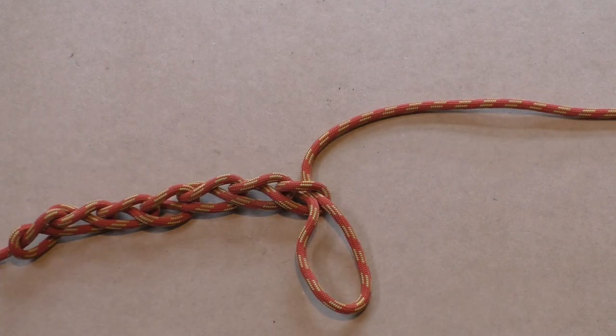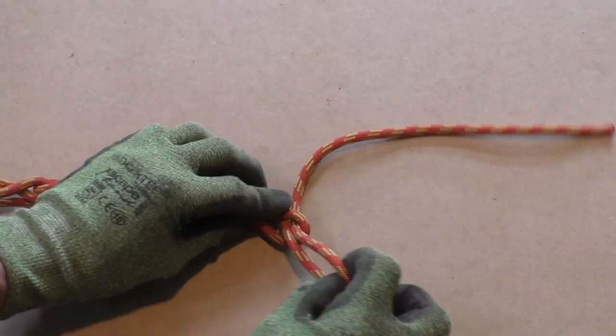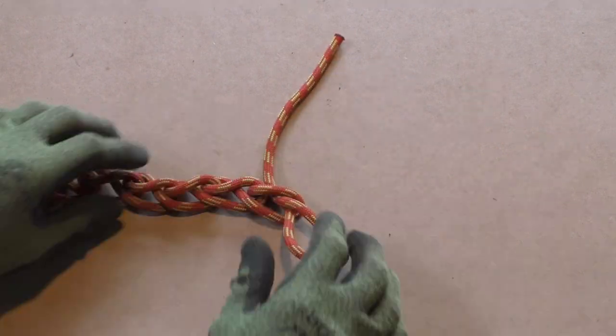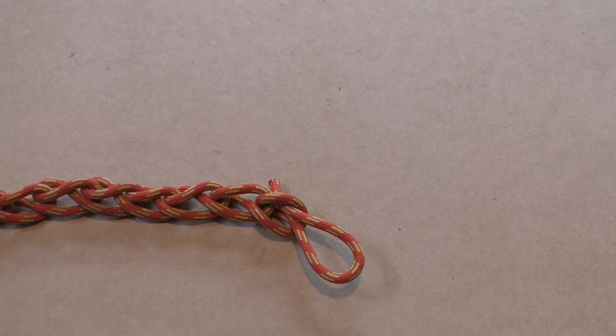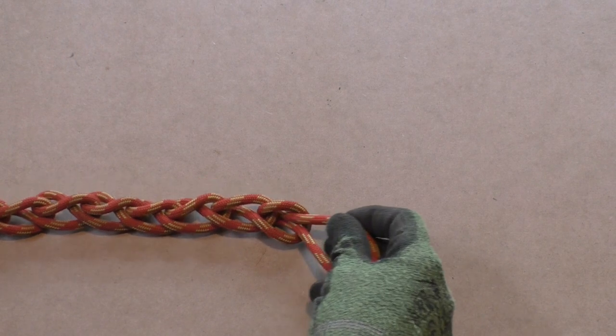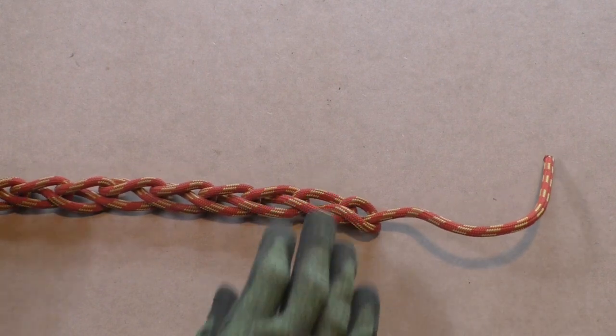If you're working with longer ropes, it's a good idea to double the rope before starting on the chain sinnet. If you don't want the chain sinnet to become undone, you can pull the last bight through as shown in the video. This will lock the chain.